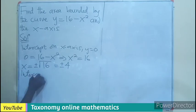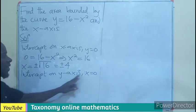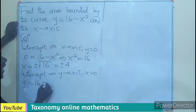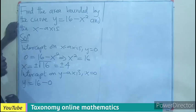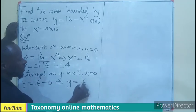Similarly, if you are going to find the intercept on the y-axis, x will be equal to 0. So y equals to 16 minus 0 squared, which will still be 0. It implies that y is going to be 16.